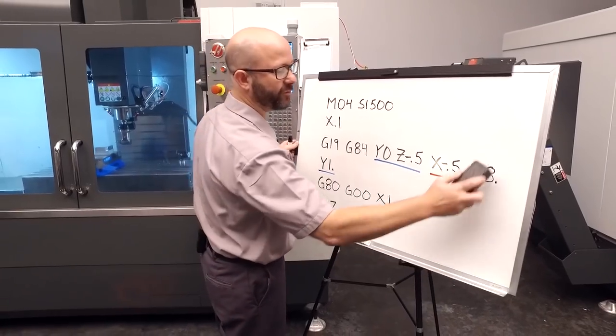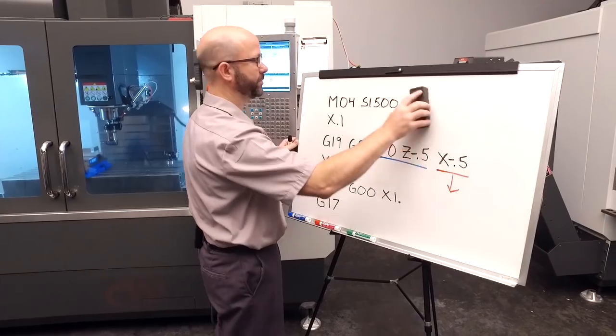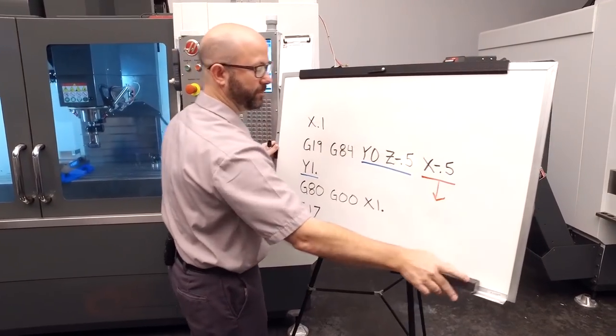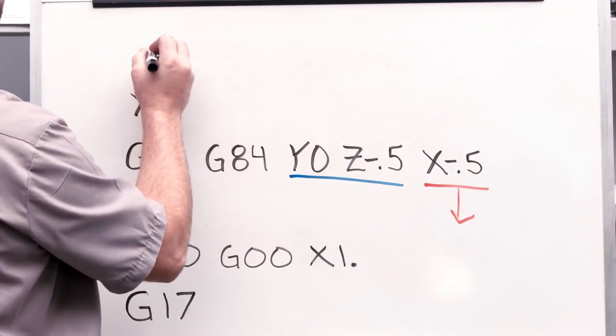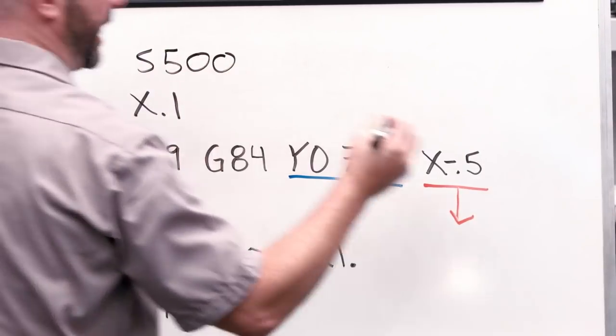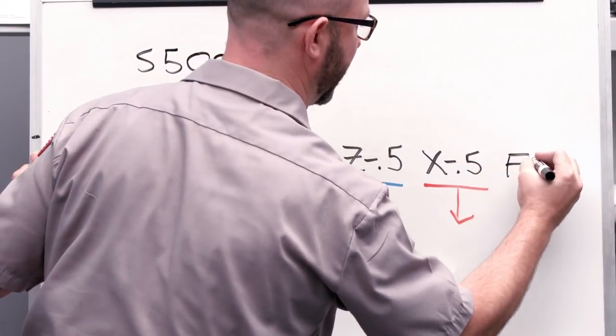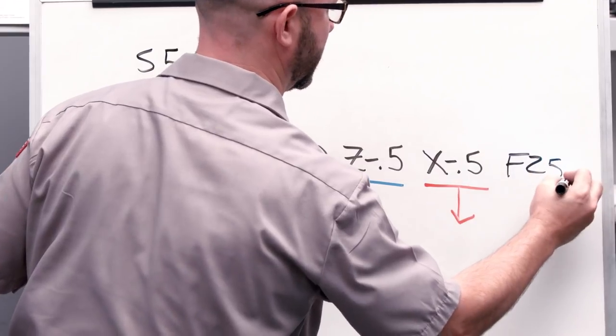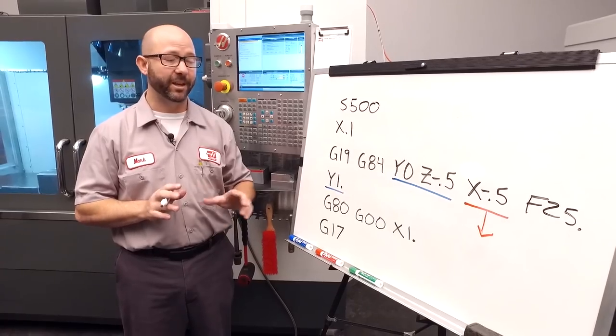We also need to change our feed rates, right, because we're using a tap, and our RPM. I'm going to go a very wimpy 500 RPM at 25 inches a minute. Now, wait a second. Here's a problem. I used a G84 to tap.